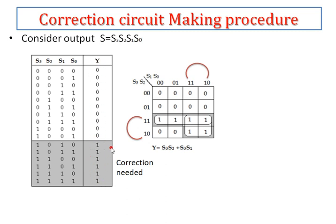By drawing a K-map for the correction signal Y, I will design the circuit. I use a 16-cell K-map (2 to the power 4) and mark 1s for positions 10 through 15. From the groupings on the K-map, the first group gives S3·S2 and the second group gives S3·S1. So the correction circuit expression is Y = S3·S2 + S3·S1.